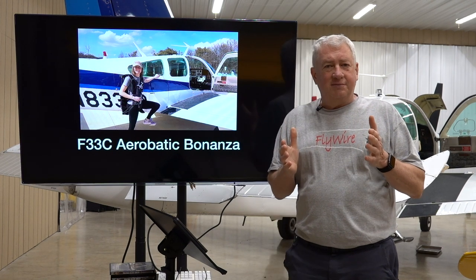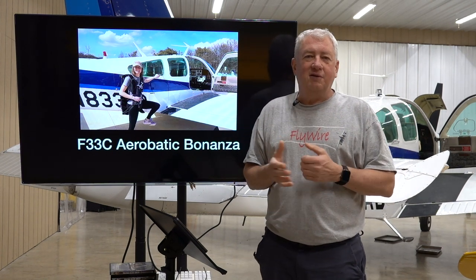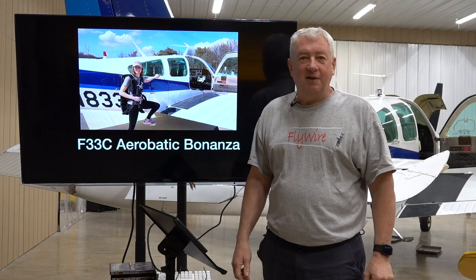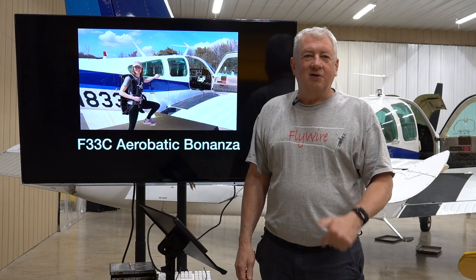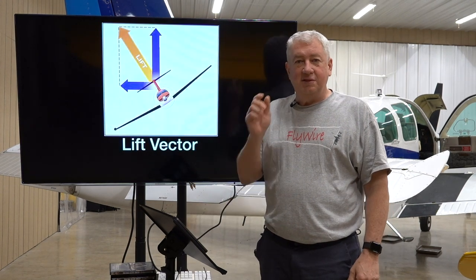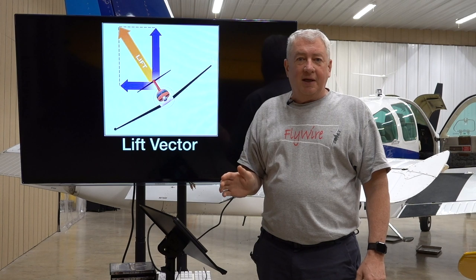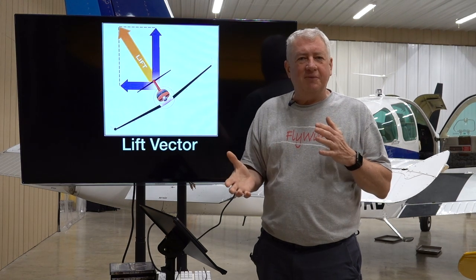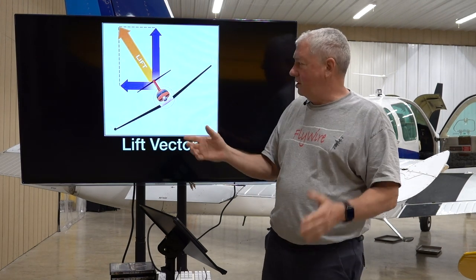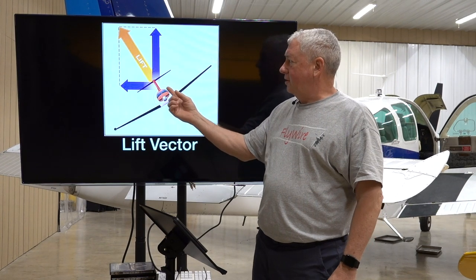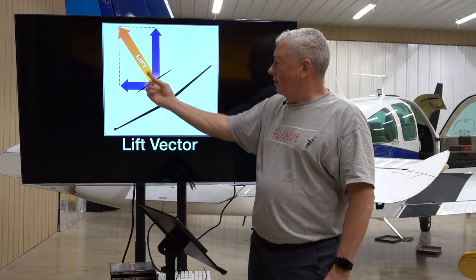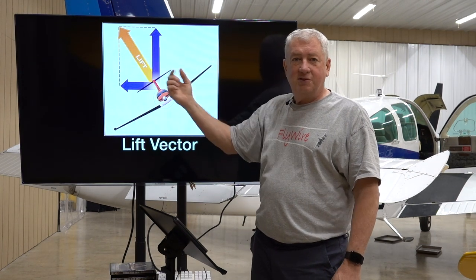Definitions — learning is fun. The first definition is a lift vector. Have you ever heard of a lift vector? Instead of getting complicated with vector math, let's just say that a vector is a force in a direction — it's a sum of the different forces acting on a body going in a particular direction. You can see that's the way this lift vector is going.